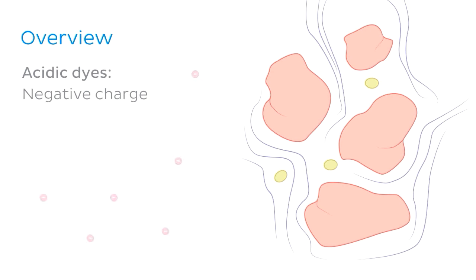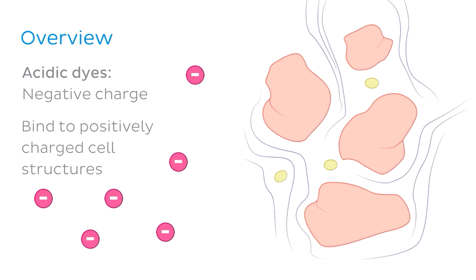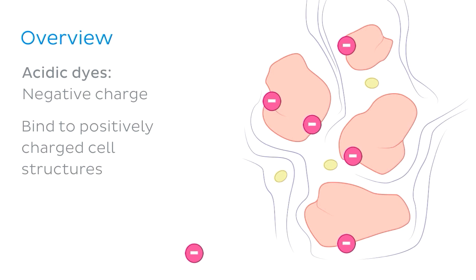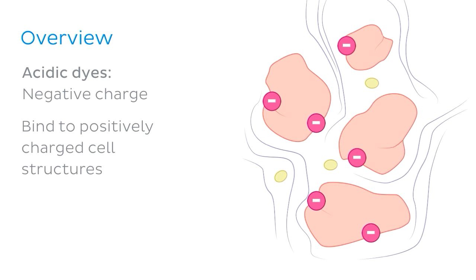Acidic dyes carry a negative charge and so they bind to positively charged cell structures. To give you a better idea of this, let's look at this quick visual. Here we see the negatively charged dye binding to the positively charged cytoplasmic proteins. This makes them appear colored — in this case, pink.